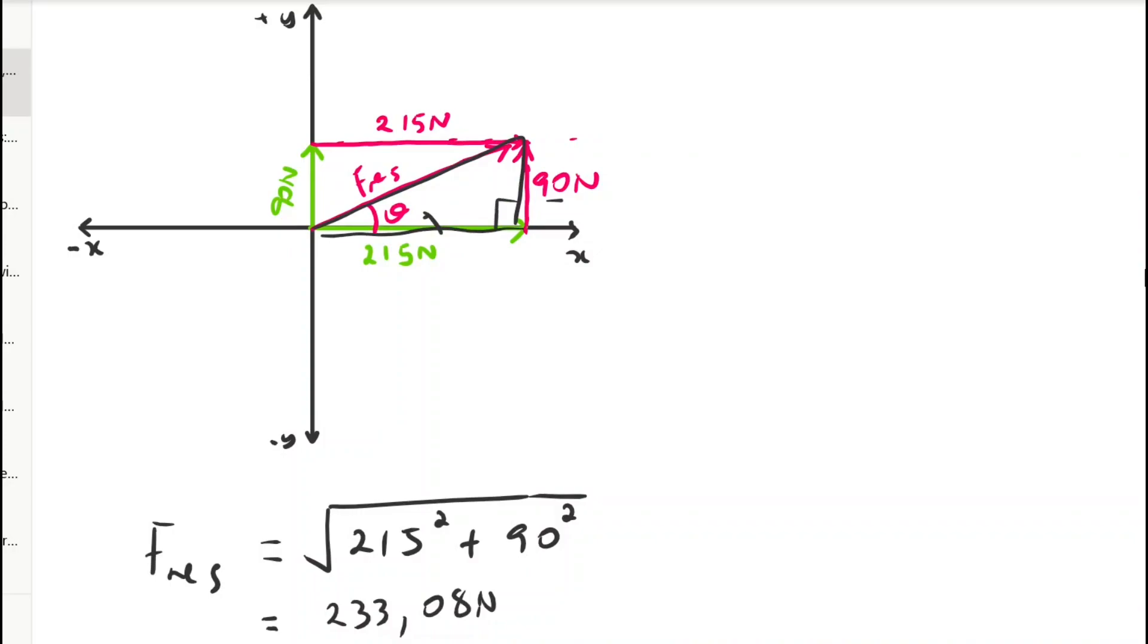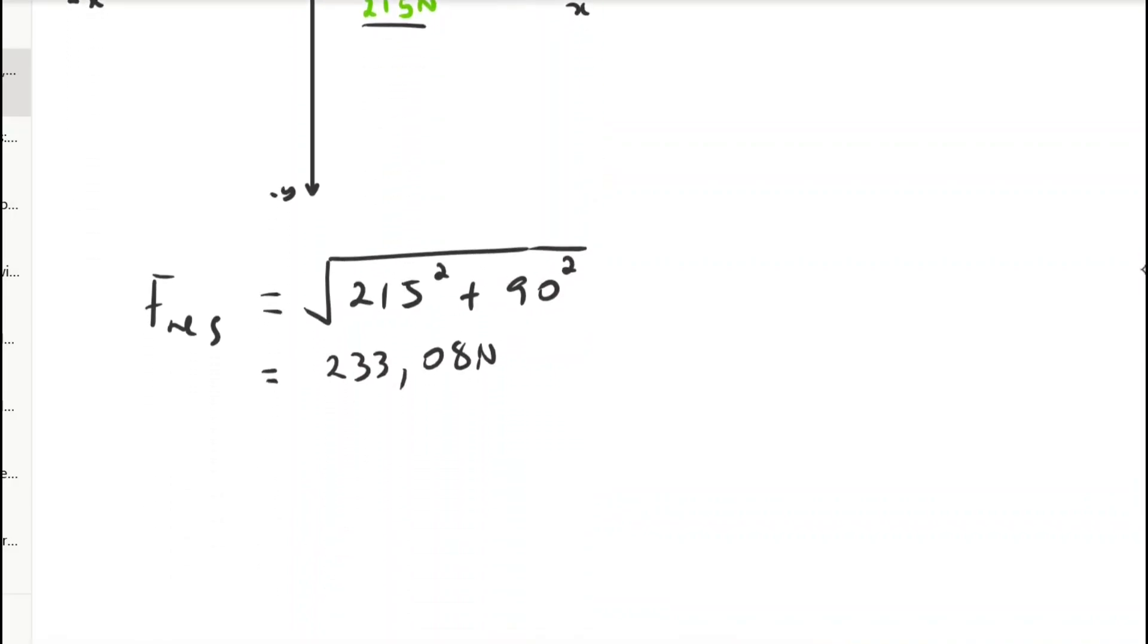This 90 is opposite this angle theta, and this 215 is adjacent to the angle theta. Opposite and adjacent gives us tangent of theta.